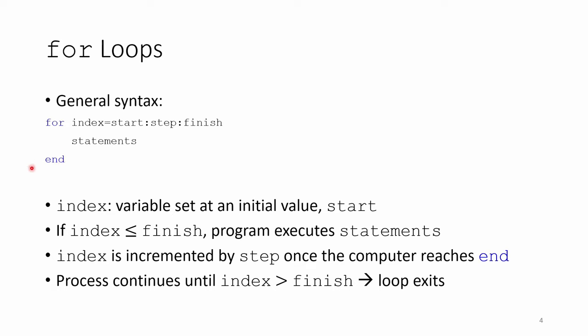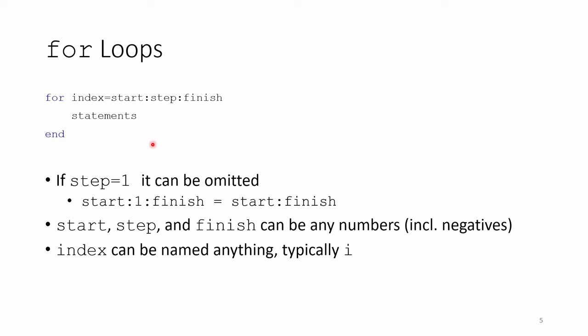When the for loop is executed, the computer compares the value of index to finish. If index is less than or equal to finish, the program will execute the statements. When it reaches the end keyword, index is incremented by step, and the program goes back to the start for the next iteration. This process continues until index exceeds finish, at which point the loop terminates. It's pretty common in practice for step to be 1. If so, we can drop step, since MATLAB will automatically increment vectors by 1 if step is not supplied.